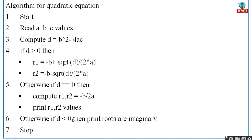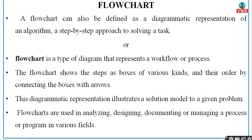The third condition is: if d is less than 0, print 'roots are imaginary'. So there are three conditions when solving a quadratic equation — d > 0, d = 0, and d < 0 — and you need to implement all three even in your program. This is one example algorithm for the quadratic equation.